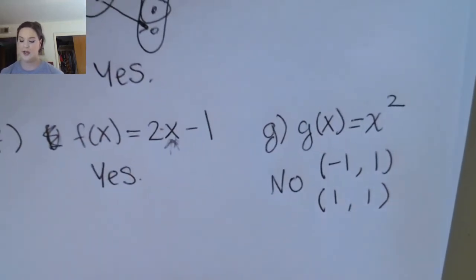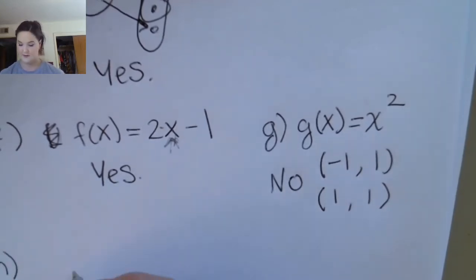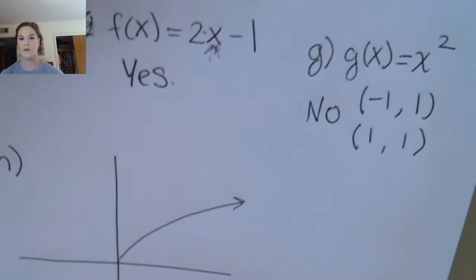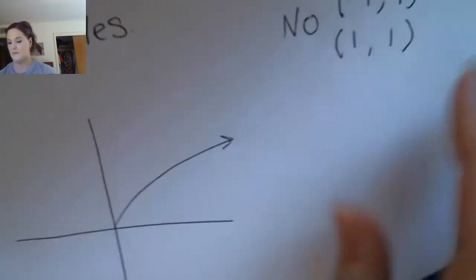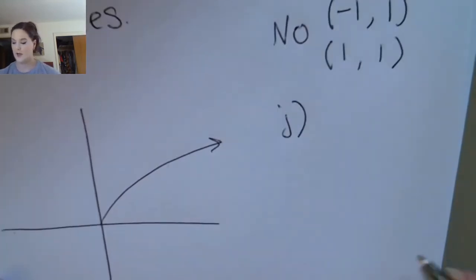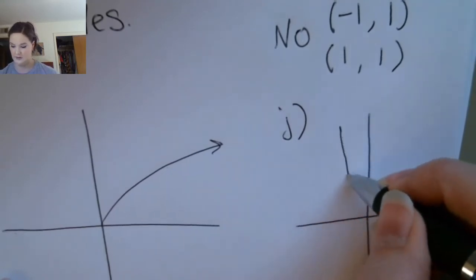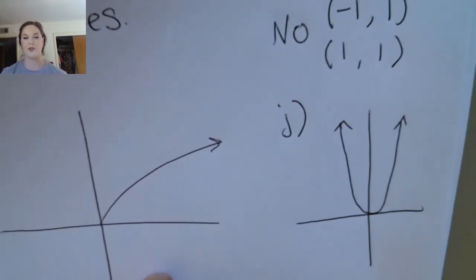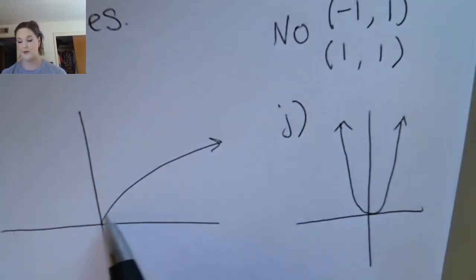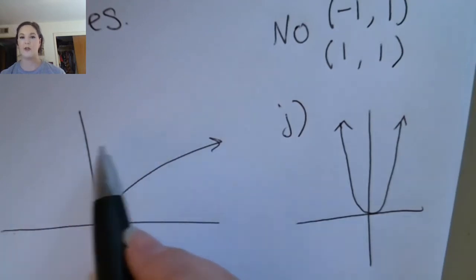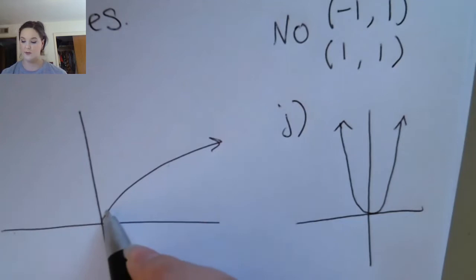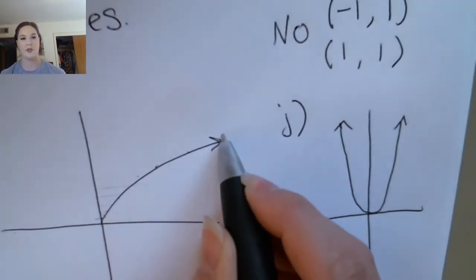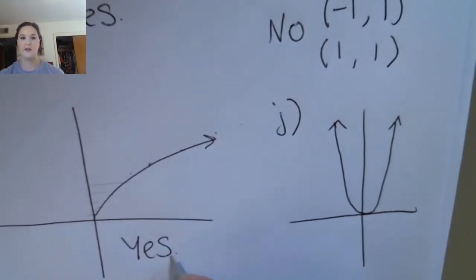Now the last thing we're going to look at is functions represented by a graph. We're going to look at two functions that should look relatively familiar. We're looking for one y value that has two corresponding x values. Each of these y values is going to have one corresponding x value because there's only one point for each y value on the graph. So we would say yes, this is one-to-one.